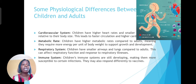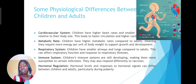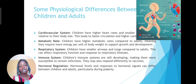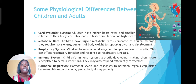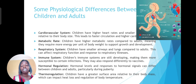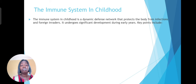The immune systems in children are still developing, making them more susceptible to certain infections. You'll notice where a child has a certain infection and even though it's infectious, the adult doesn't really have it, but another child that comes into contact with that particular child will develop the infectious disease — this is because their immune systems are not yet fully developed. Their hormonal levels and responses can differ between children and adults, especially during puberty. Children also have greater surface area relative to their body mass, which can impact heat loss and regulation of temperature.